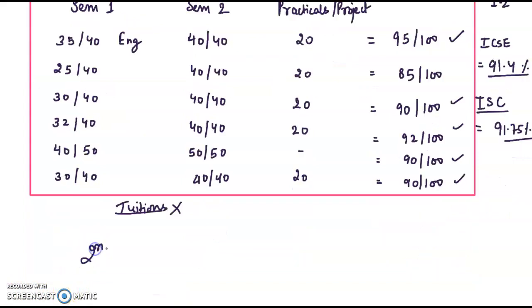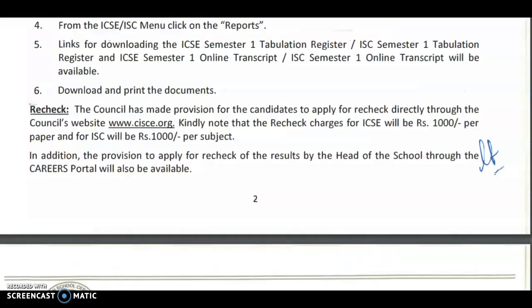And the second topic we have to discuss is about the rechecking of copies. If you feel you have been given less marks in any of the subjects, then you can apply for rechecking, 1000 rupees per subject.